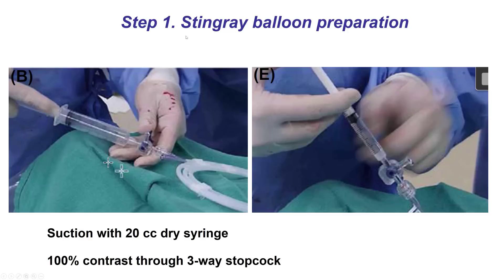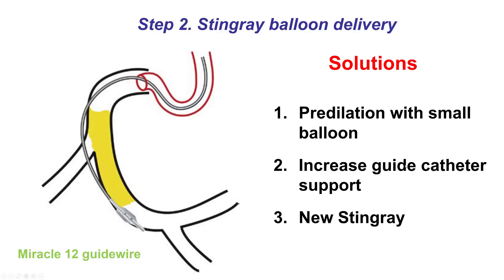Preparing the Stingray balloon is important to optimize visualization. The first step is to pull negative with a dry 20 cc syringe. Then 100% contrast is used to fill the balloon so it becomes more opaque. The balloon is then advanced to the reentry zone — the best way to do this is using a Miracle 12 guide wire, which is stiff and provides good support. If it is difficult to deliver the Stingray balloon, solutions include predilating the sub-intimal space with a small 1.0 to 1.5 mm balloon, increasing support, or using a new Stingray balloon.